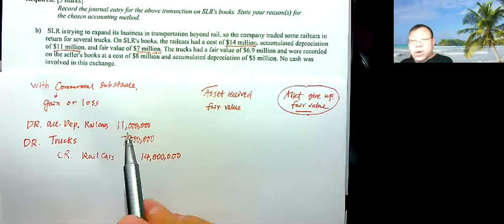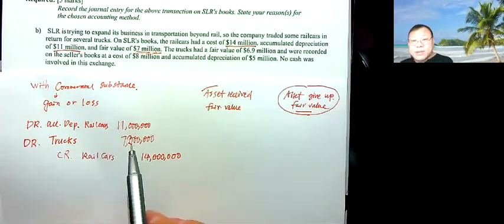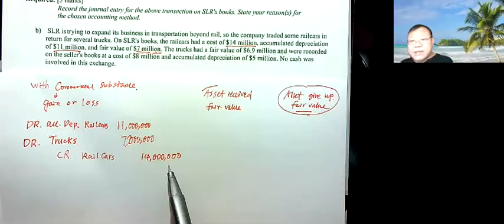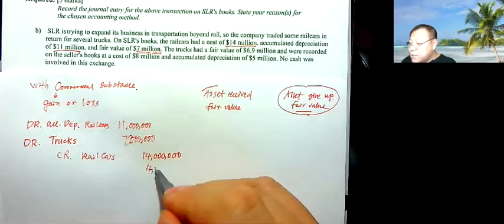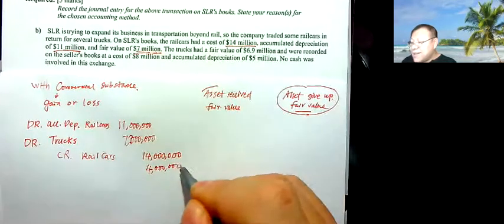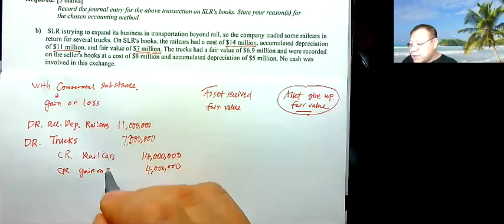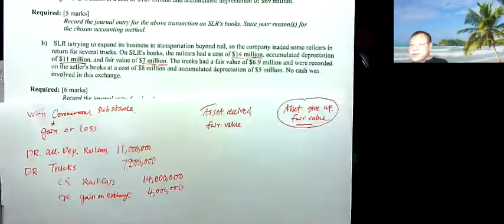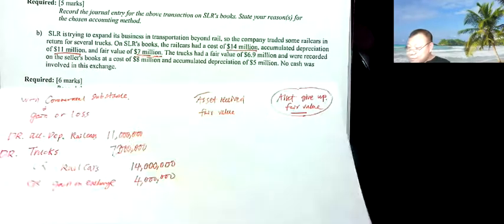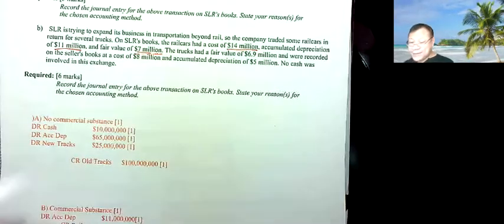Now the total debits are $18 million. The credit for rail cars is $40 million, so I need an additional $22 million credit. That has to be the gain on the exchange. I hope that makes sense.